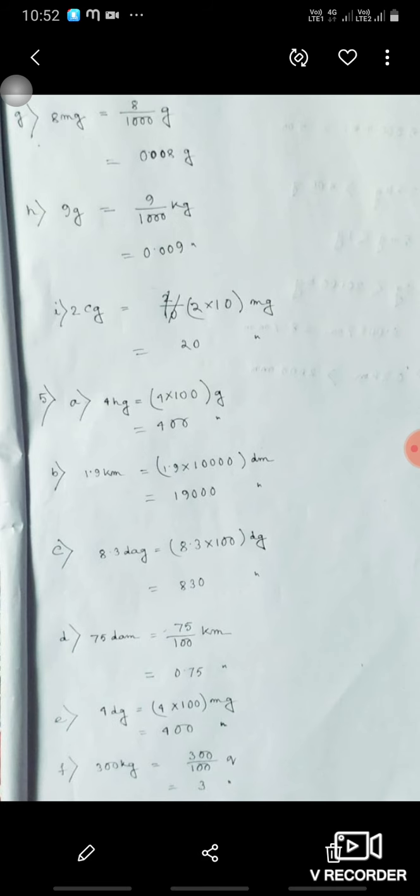9 gram means 9 upon 1000 kilogram, 0.009. 2 centigram means 2 into 10 milligram, that is 20 milligram. 4 hectogram means 4 into 100 gram, 400.